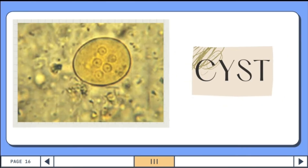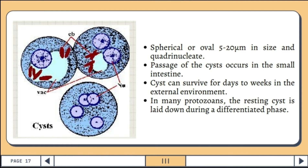The cyst is dormant and helps the parasite survive in difficult settings, and can survive to infect another animal. The shape of the cyst is spherical or oval, the size is 5 to 20 micrometers and quadrinucleate. The passage of the cyst occurs in the small intestine, and mammals become infected when they swallow contaminated food or water carrying infective cysts, from which trophozoites travel to the large intestine, multiplying via binary fission and producing more cysts. Cysts can survive for days to weeks in the external environment.